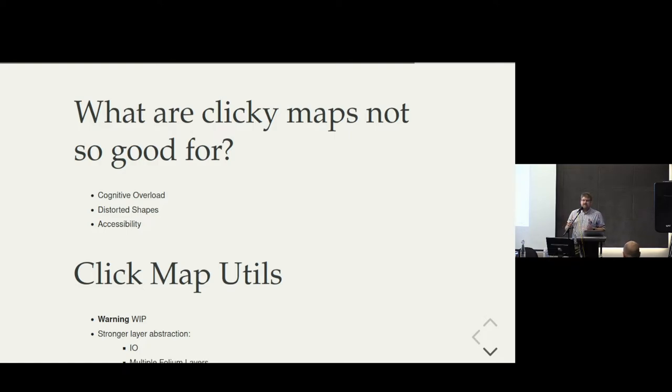What it does is try to make the layer abstraction a little bit stronger. Folium has a notion of base maps as well as layers — choropleth layers, outline shapes, markers, etc. — those are layers of information you're putting on top of your map. We're trying to make that abstraction a little bit stronger in our library, with a particular focus on I/O: making it much easier to express and capture information relating to fetching the data that goes into the map.